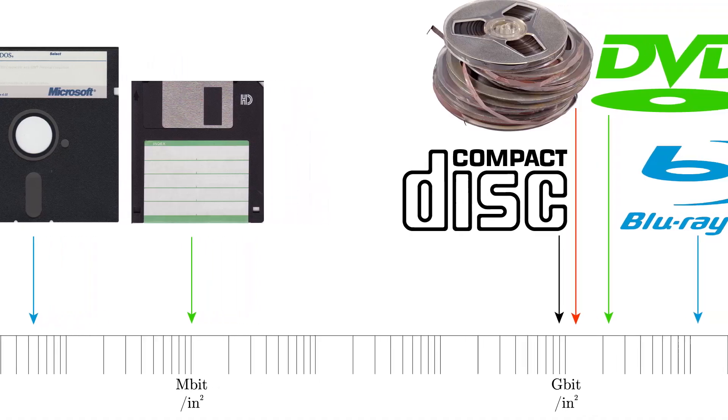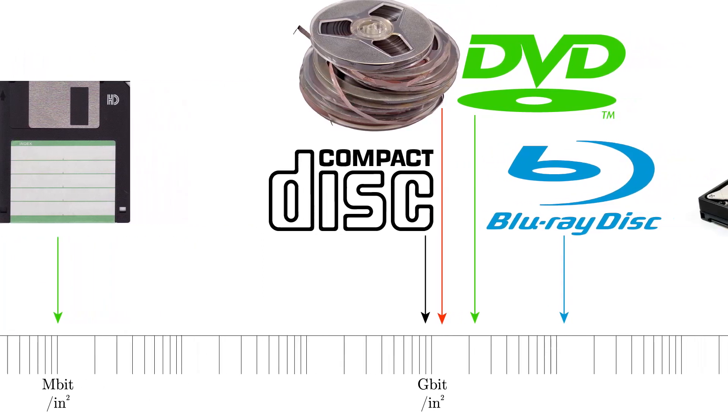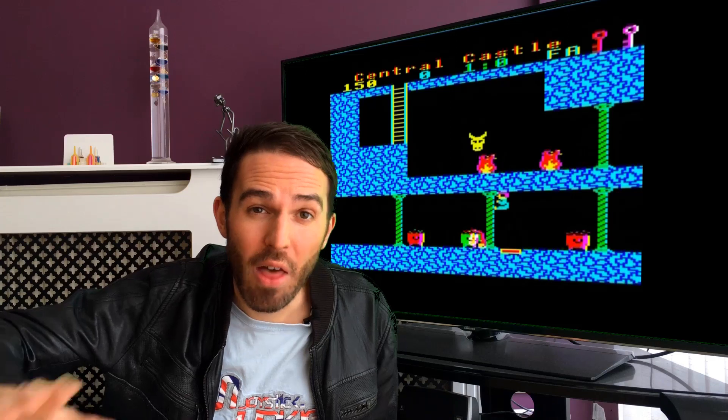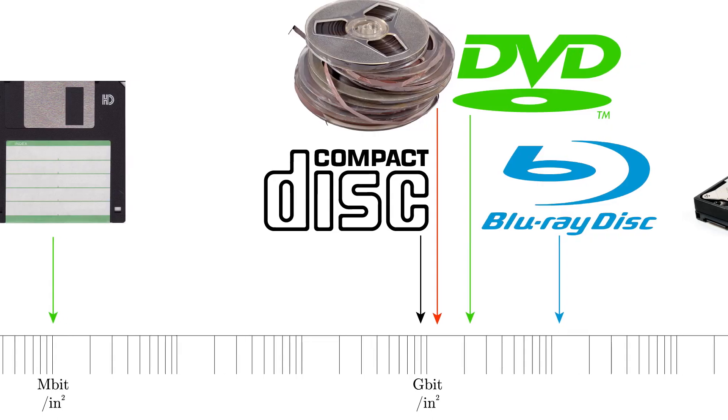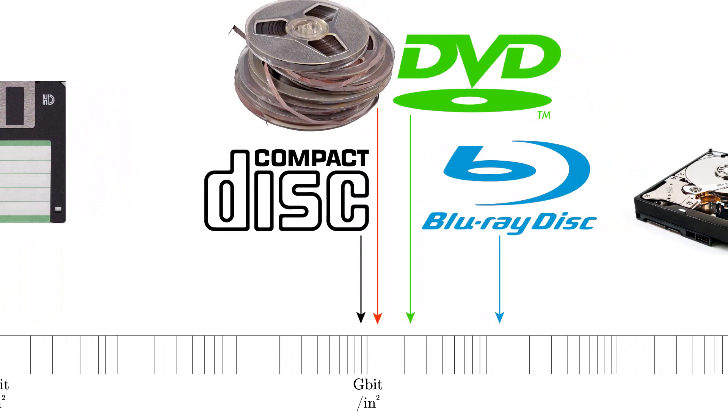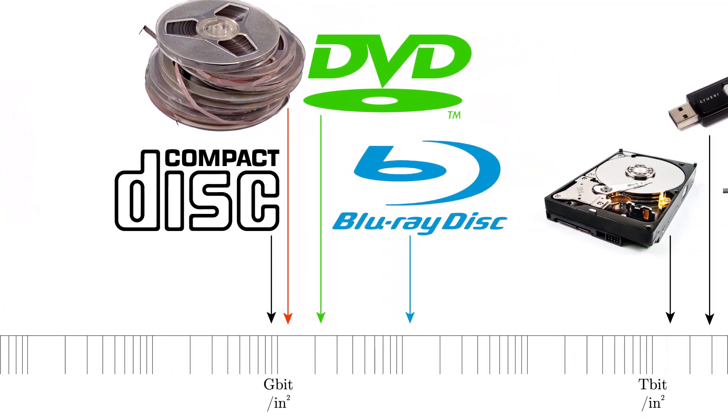That's why a DVD has an Areal Density of 2.2 gigabits per square inch, whereas Blu-rays have 12.5. The problem with things like CDs, DVDs and now Blu-rays is that they are a standard — you cannot change them, you cannot increase the capacity — whereas other technologies are allowed to progress. Back in the 80s when CDs were invented they were way better than any of the hard drives that existed. But hard drive technology now is amazing; we can fit 1.2 terabits of information onto just a square inch.